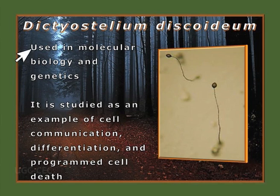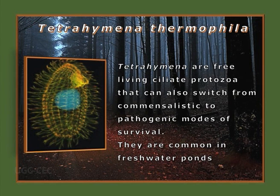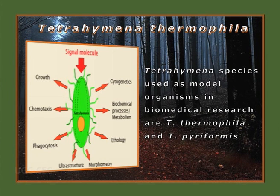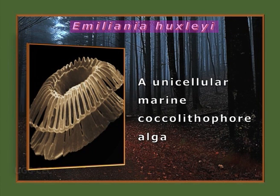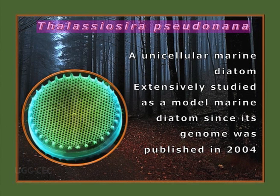Tetrahymena thermophila is a free-living ciliate protozoan that can switch from a commensalistic pathway to pathogenic modes of survival, common in freshwater ponds and used as a model organism in biomedical research. Next comes Emiliania huxleyi, a unicellular marine coccolithophore algae extensively studied as a model phytoplankton species. Finally, Thalassiosira pseudonana is a unicellular marine algae extensively studied as a model marine diatom, since its genome was published in 2004.